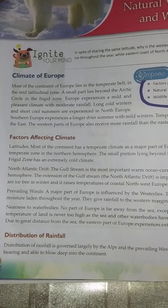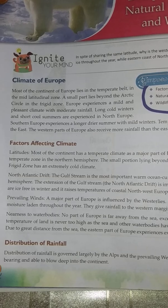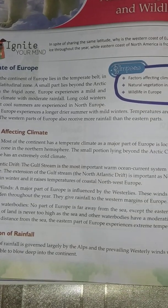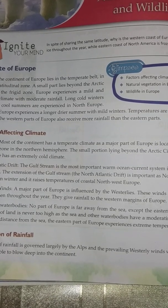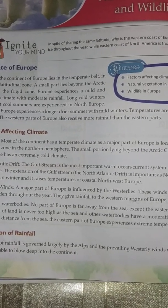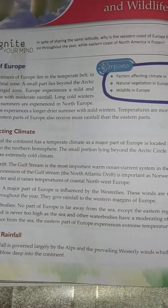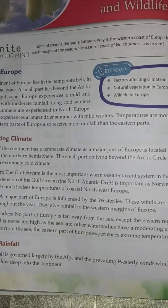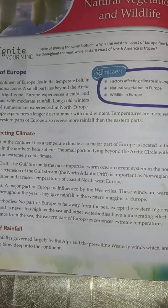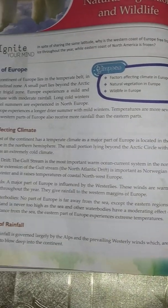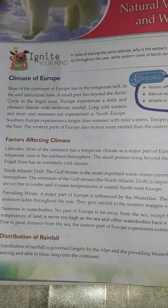Next is the distribution of rainfall. Distribution of rainfall is governed largely by the location of the Alps - the most important mountain range in Europe. You have marked the Alps in your map pointing activity and you know Mont Blanc, the peak over there. Rainfall is governed by this mountain range and the prevailing westerly winds which are rain-bearing and able to blow into the continent.